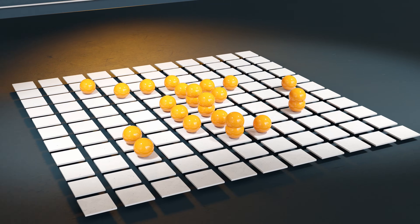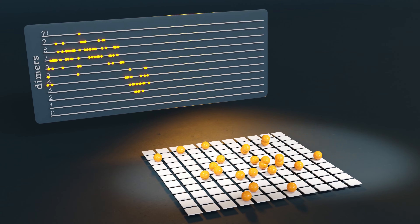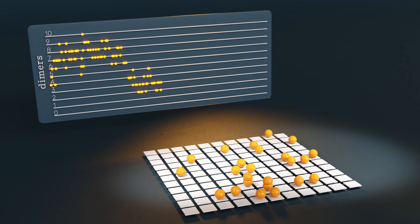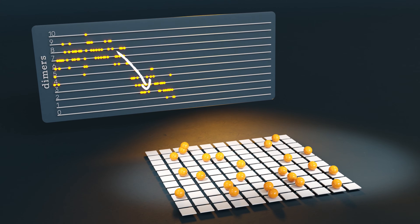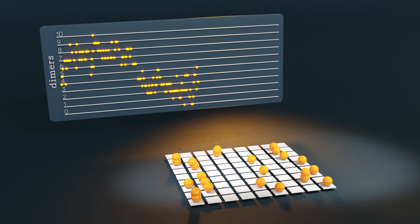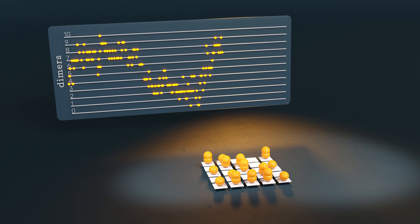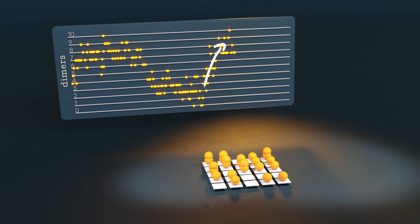If we increase the accessible space, the volume, the number of dimers goes down. If we instead decrease the volume, the number of dimers goes up. That's one example of Le Chatelier's principle that we'll look into.